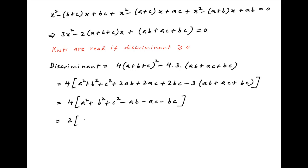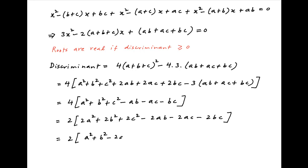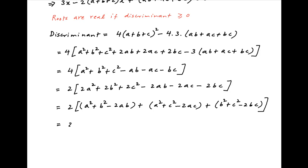This can be rewritten as 2 times (2a squared plus 2b squared plus 2c squared minus 2ab minus 2ac minus 2bc), which equals (a minus b) squared plus (b minus c) squared plus (a minus c) squared.